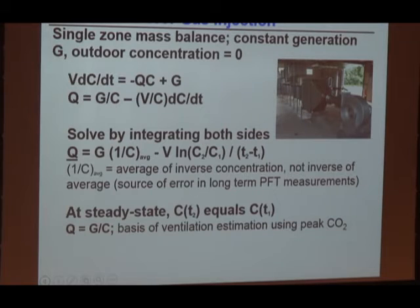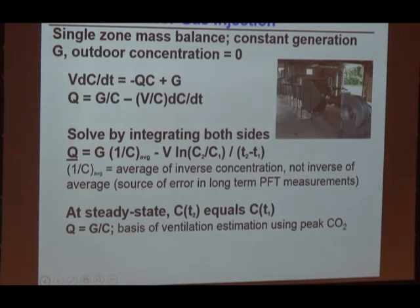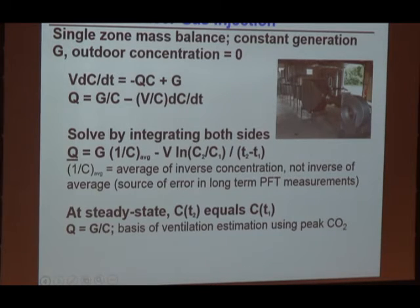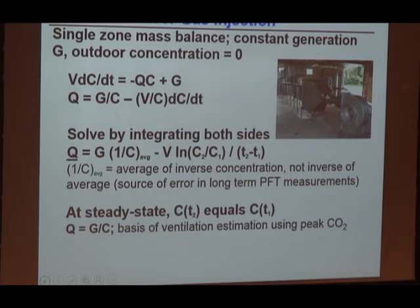The constant injection technique involves injecting the tracer at a constant rate and measuring the concentration. In some situations this is a very appropriate technique. It's the basis for the long-term PFT measurements that have been around for several decades — though there is an inherent bias in those long-term measurements that you need to be careful about. This is also the basis for using peak CO2 concentrations to estimate ventilation rates, which I'll discuss next. It can also be a very useful technique for measuring flow rates in ducts: inject at one end and measure concentration further down.